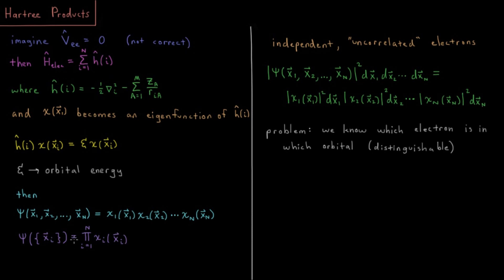This is all very well and good, and would be what we would call a Hartree product. A product of a bunch of spin orbitals in a system would be a Hartree product.